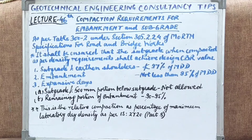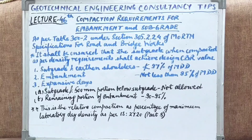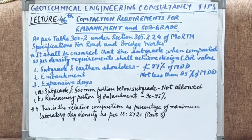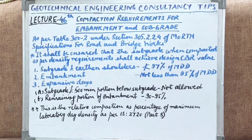What this code says about expansive clays or soils is that these soils have to be entirely avoided. But in any case, if they have to be used in subgrade due to any constraints, then those expansive clays placed in the subgrade and the 500 mm portion below the subgrade are not at all to be used in the subgrade. For the remaining portion of the embankment, the desired density should be 90 to 95 percent of MDD.